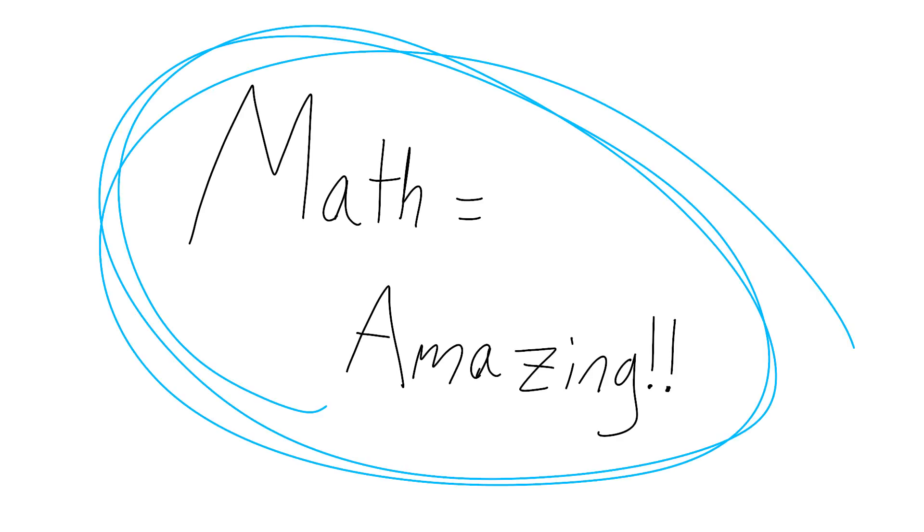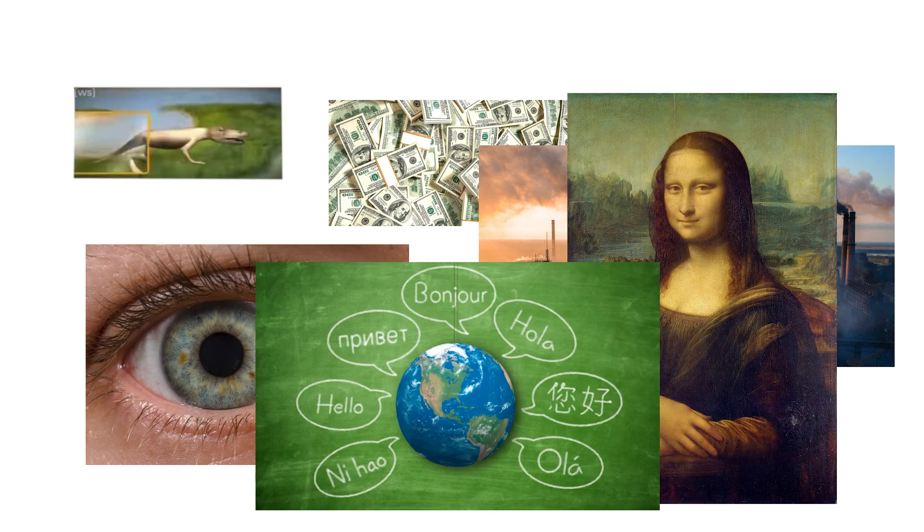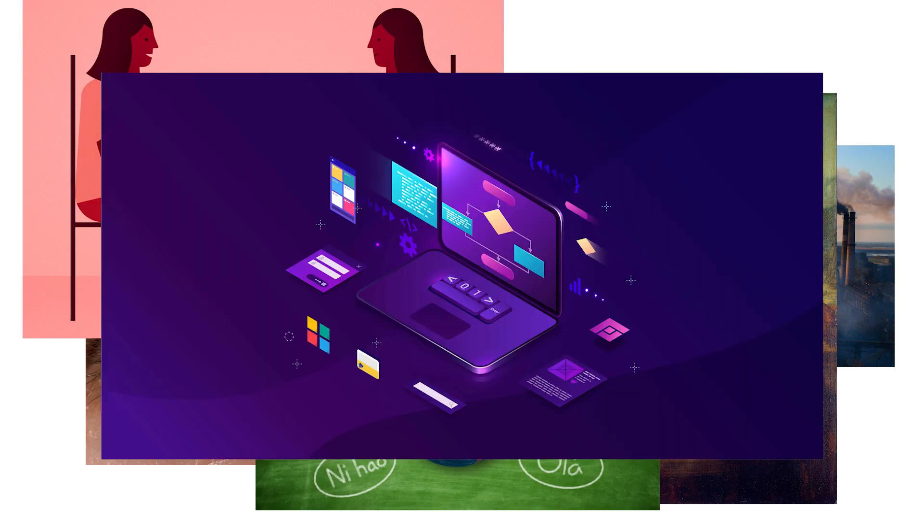Alright, so I've established that math is an absolutely awesome thing in general. Math can literally be applied to anything in the world. I showed you two examples, being music and cameras. But there's also evolution, the economy, climate change, psychology, art, language, communication, programming. Yeah. Math can be, and is, part of everything in our world today.